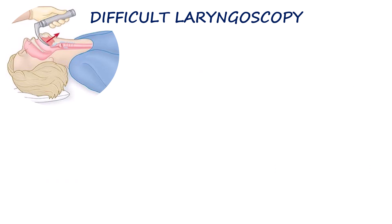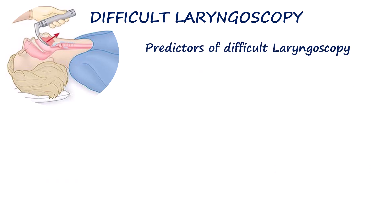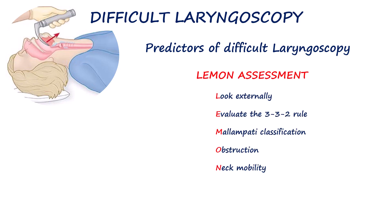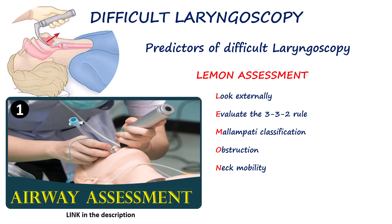As with predicting difficult laryngoscopy, many of the anatomical and clinical predictors overlap for difficult mask ventilation, difficult supraglottic airway insertion, and difficult laryngoscopy or intubation. These predictors can be systematically assessed using the LEMON criteria. The airway assessment portion was discussed separately.